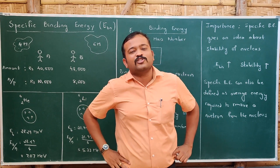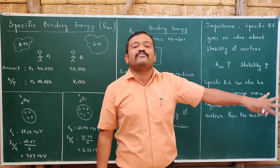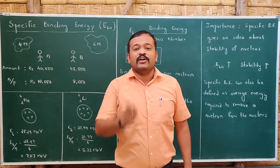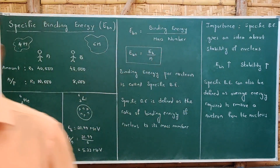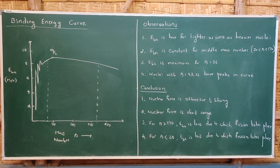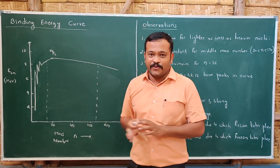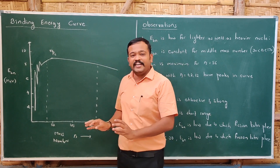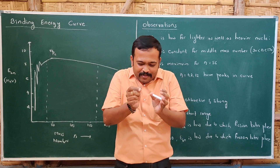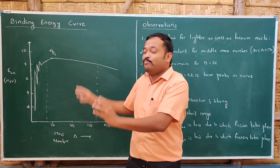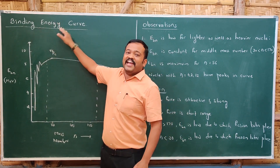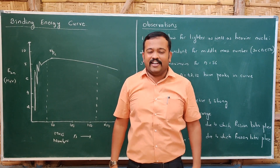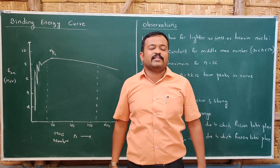Let us now calculate the specific binding energy of all the elements in the periodic table and compare with their mass numbers to decide which nucleus is more stable. My next study is about the binding energy curve — the graph of specific binding energy versus mass number. We will consider the nuclei of all elements in the periodic table, calculate specific binding energy, and draw the graph. The curve obtained is called the binding energy curve.